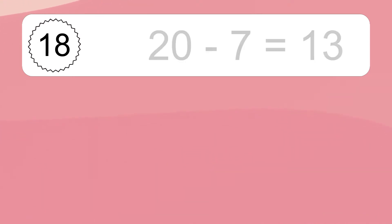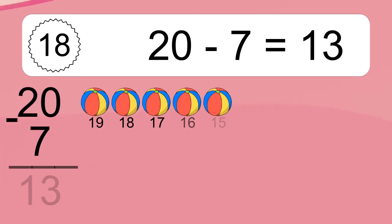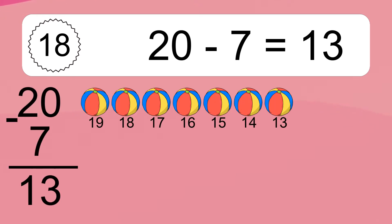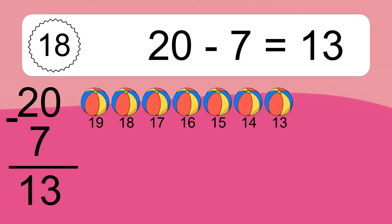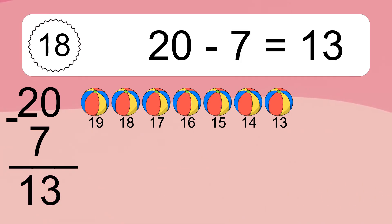20 minus 7 equals what? 20 minus 7 equals 13. Let's count it: 19, 18, 17, 16, 15, 14, 13.